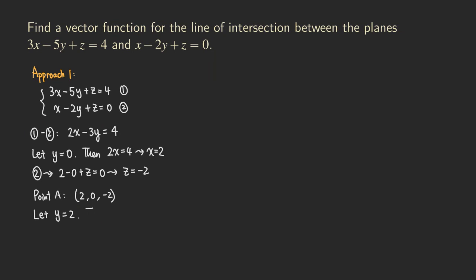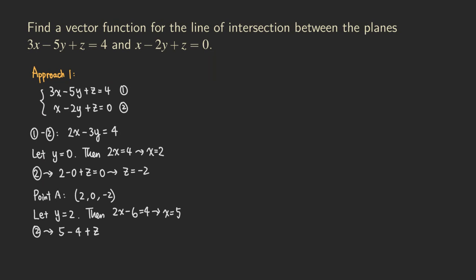Plugging y = 2 gives 2x − 6 = 4, so x = 5. Plugging back into equation 2: 5 − 4 + z = 0. So 1 + z = 0, which gives z = −1.